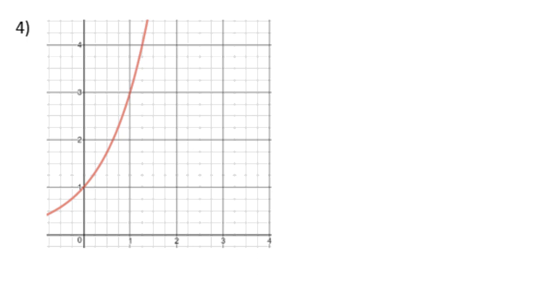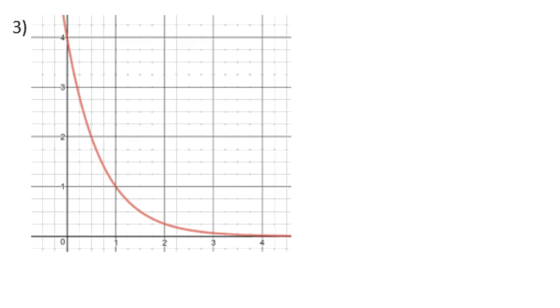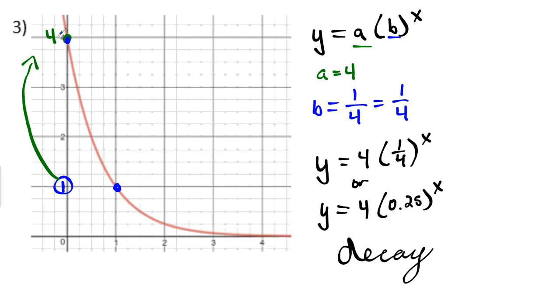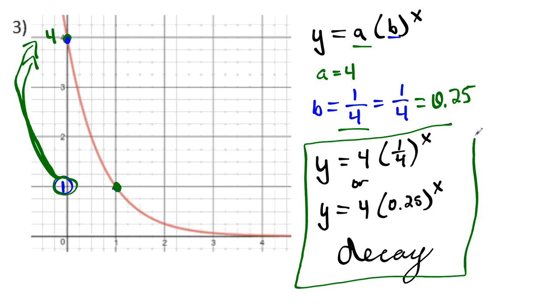Number 3 — you've got this one on your own. Pause the video and try it. For number 3, we found the Y-intercept, our A value, to be 4. To get the scale factor, there was only one other good point on the graph at coordinates (1, 1). So we take that Y value of 1 and divide it by its previous Y value of 4, giving us 1/4, which is also 0.25 as a decimal. Since the graph is going downhill, it's decreasing — also called decaying.